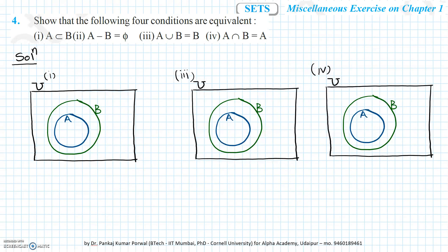Now, if A is a subset of B, every element of A will also be in B, so A minus B will obviously be an empty set. If A lies completely inside B, then A union B will be the same as set B, so A union B equals B. And if I take the intersection of A and B, I will only be left with set A, so that equals A. Doing it using a Venn diagram is very easy.